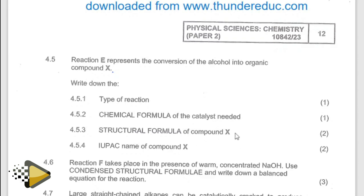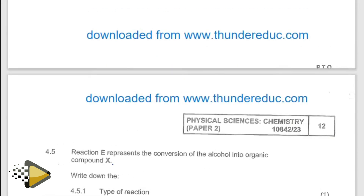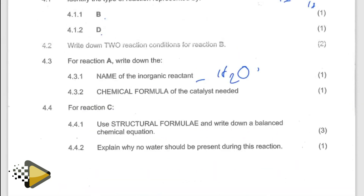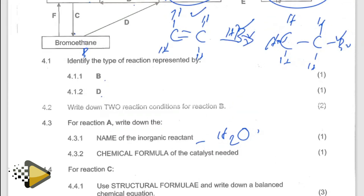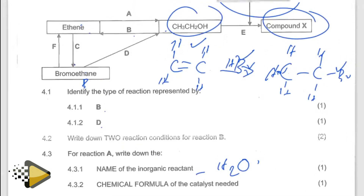Structure formula of compound X — give the IUPAC name of compound X. Structure formula of compound X: it's ethyl, because this is one, two — it's ethyl. And then this is three, so four plus one becomes five — pentanoate. Ethyl pentanoate. So you write the structural formula. That's the alkyl — remember the alkyl — gives that one oxygen, and then another oxygen comes from there.